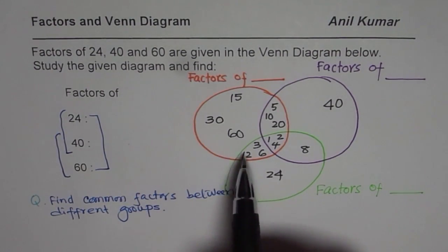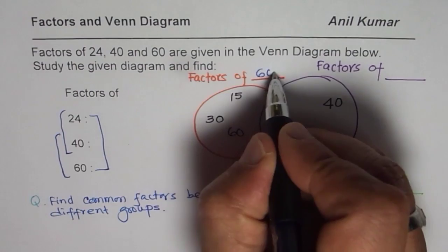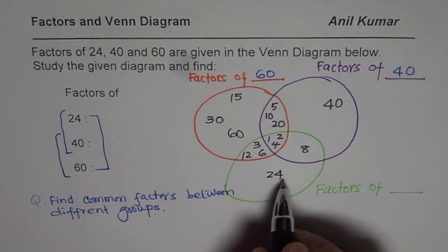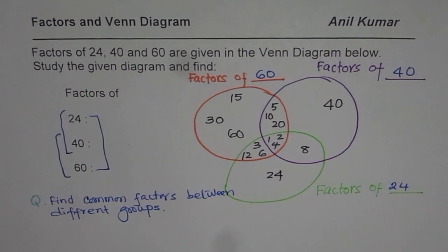Look for the greatest number. Greatest number is 60, so it is definitely factors of 60. Here, the greatest number is 40, factors of 40. The highest number here is 24. So, green circle represents factors of 24.